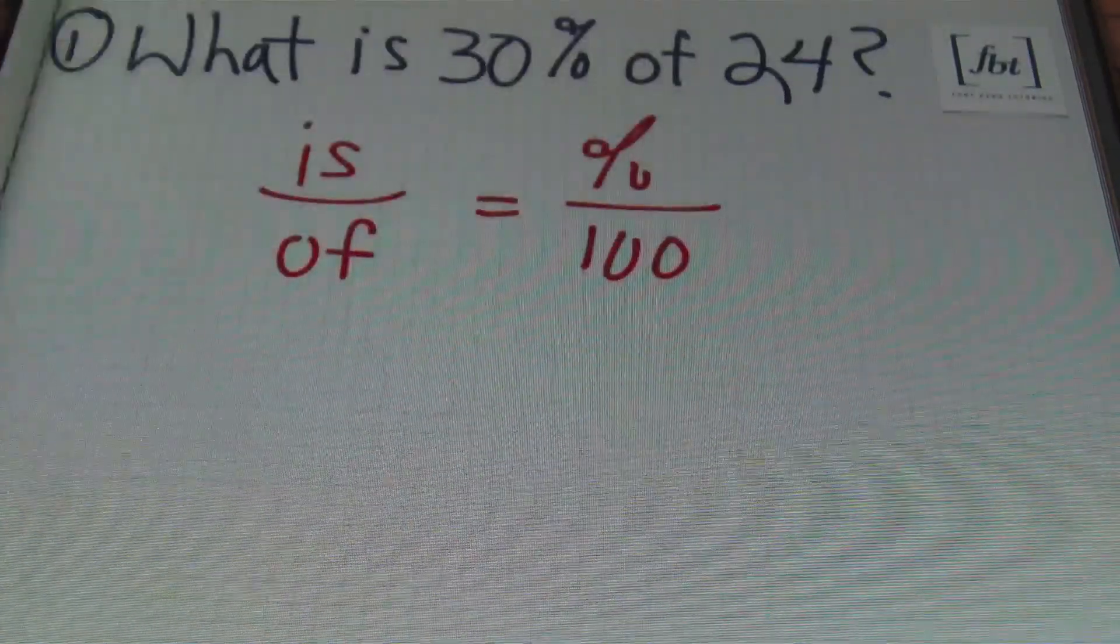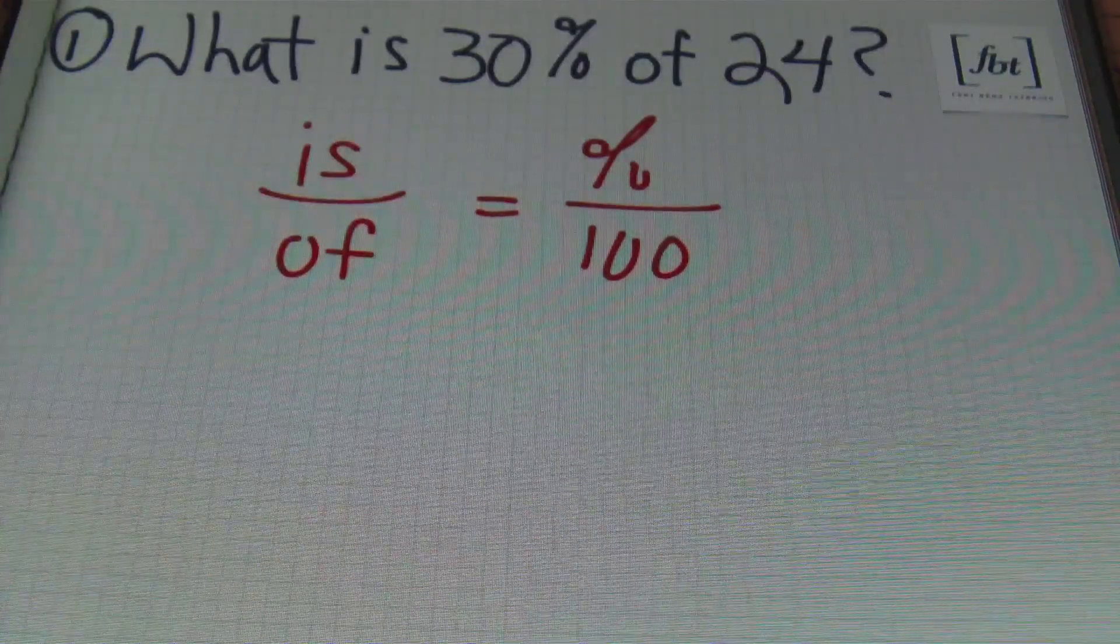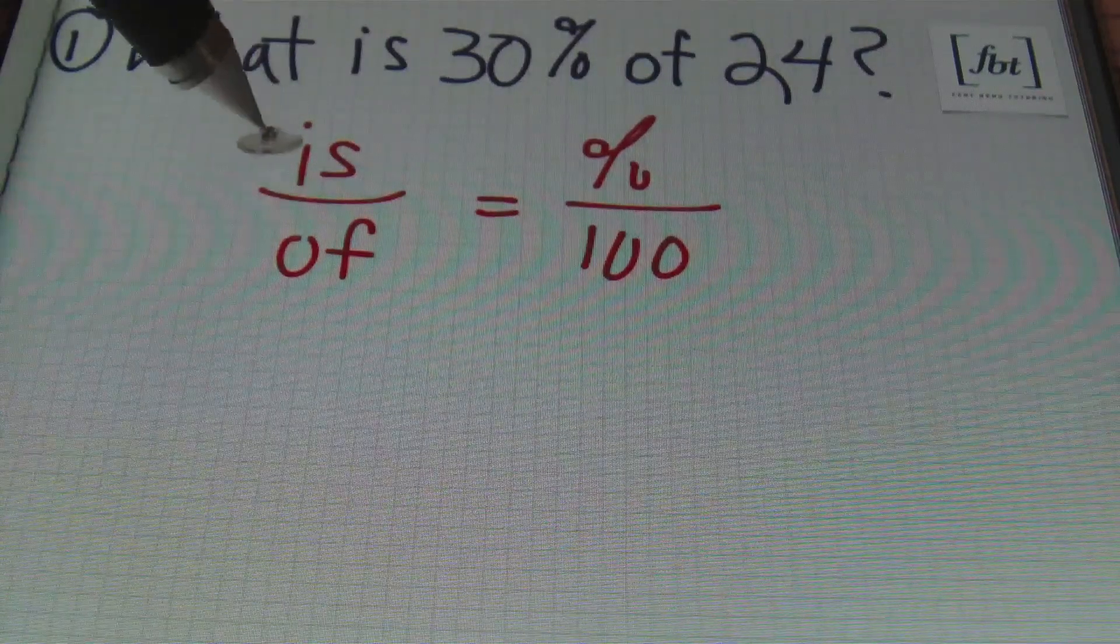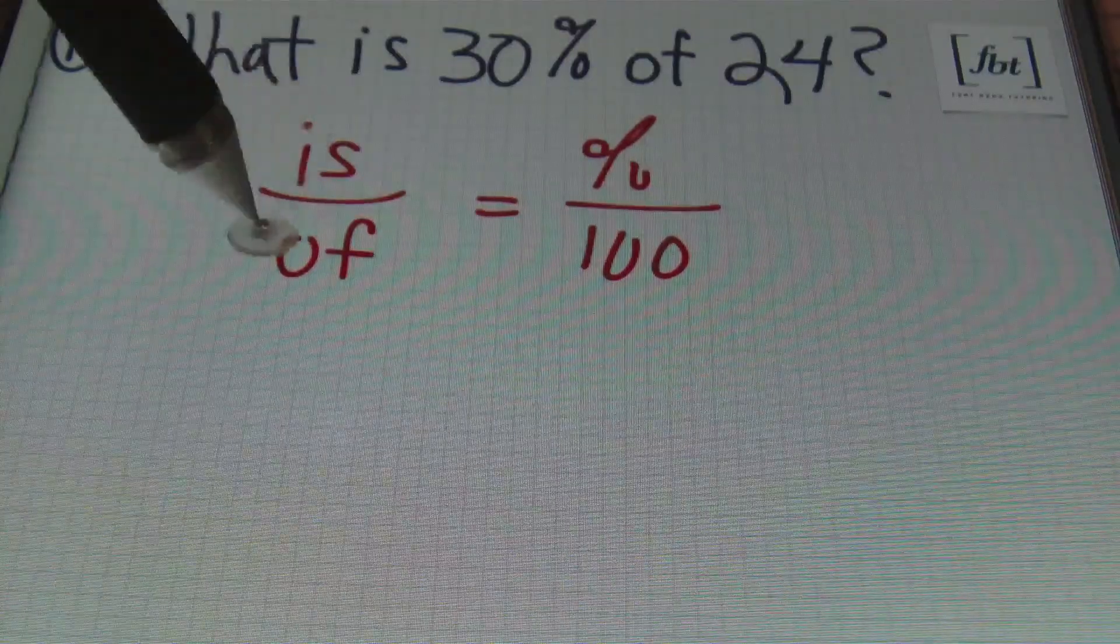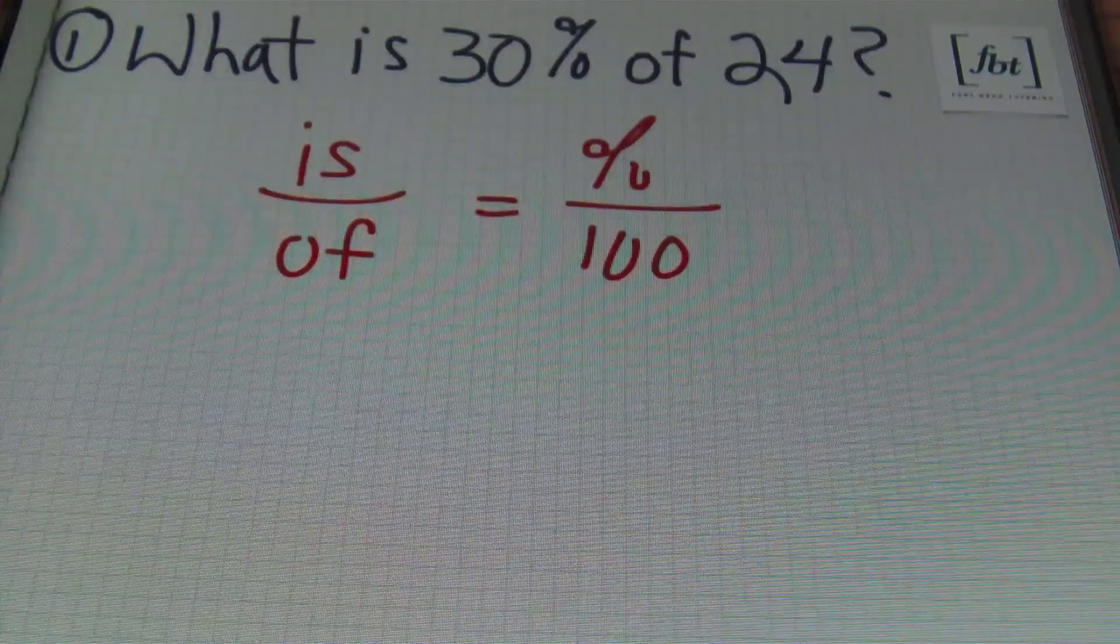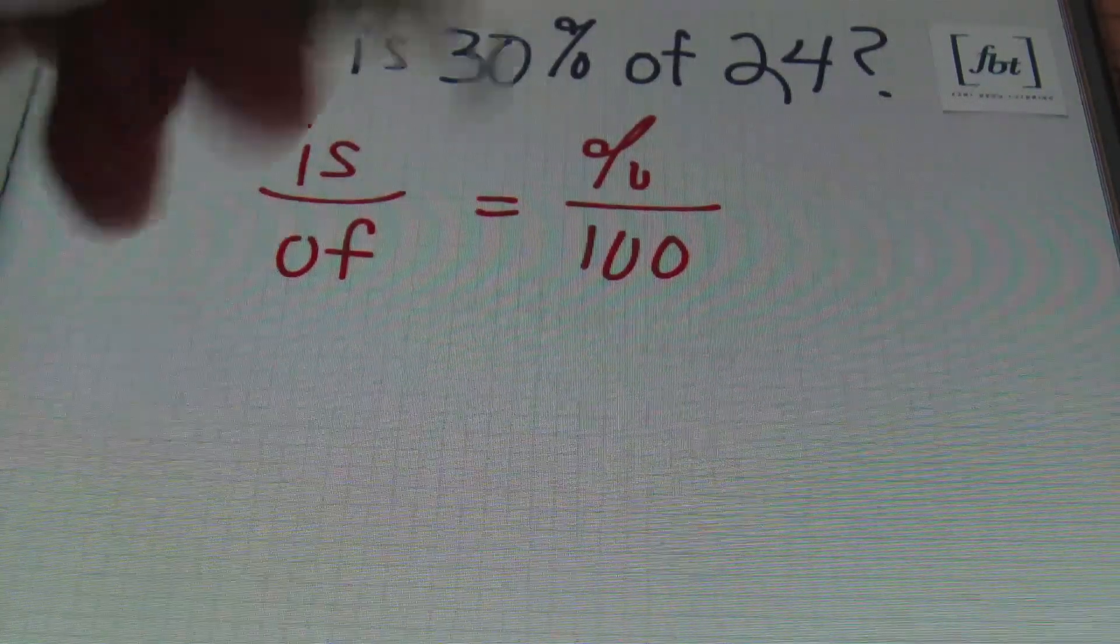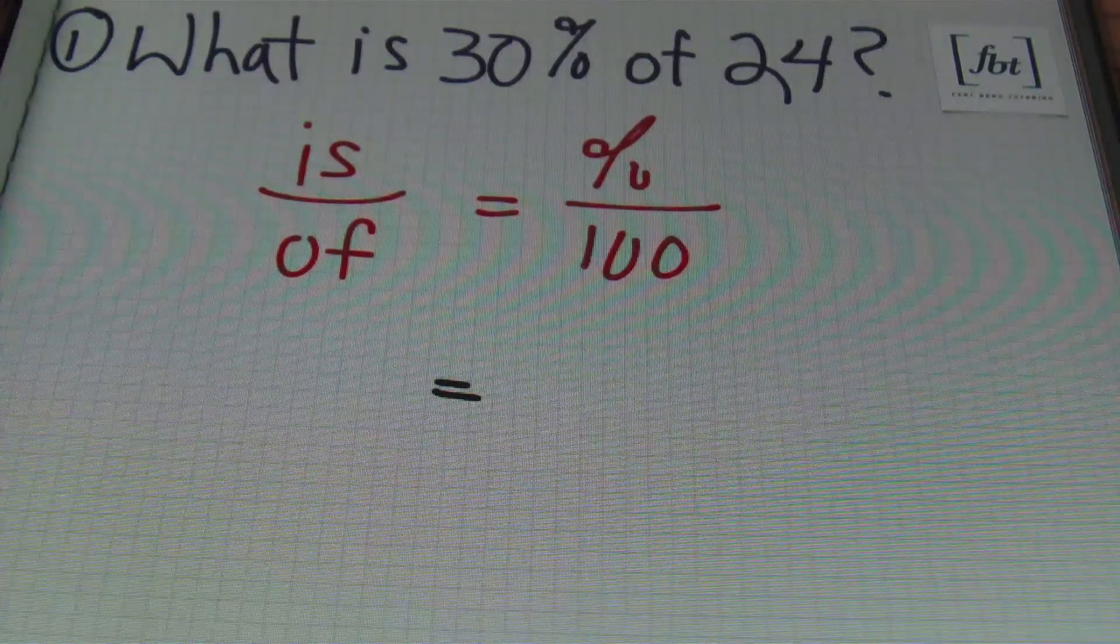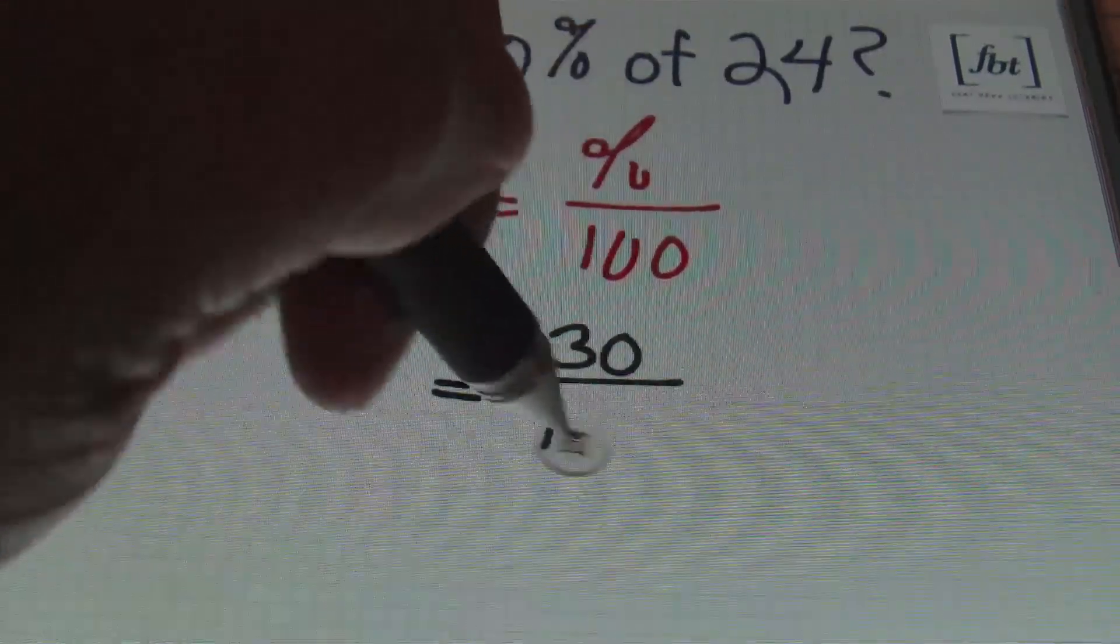Problem number one again - I told you I was going to show you the percent proportion method. And that percent proportion that I use is: 'is' over 'of' equals the percent over 100. So let me show you how to plug this information in. First of all, let's start by identifying the percent. It's always easier if you start with the percent first.